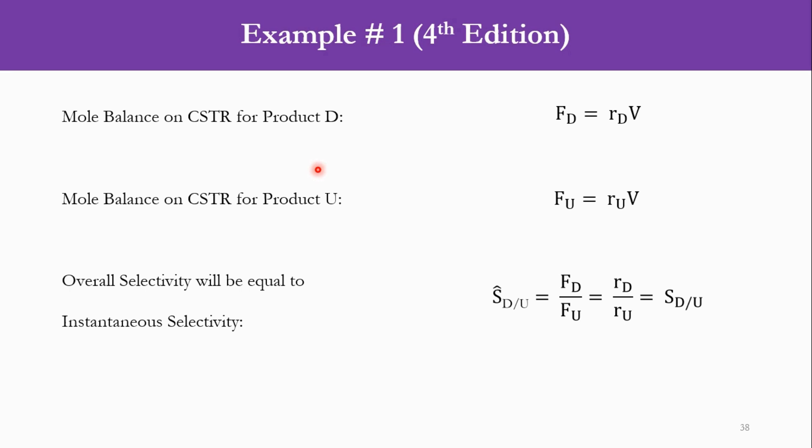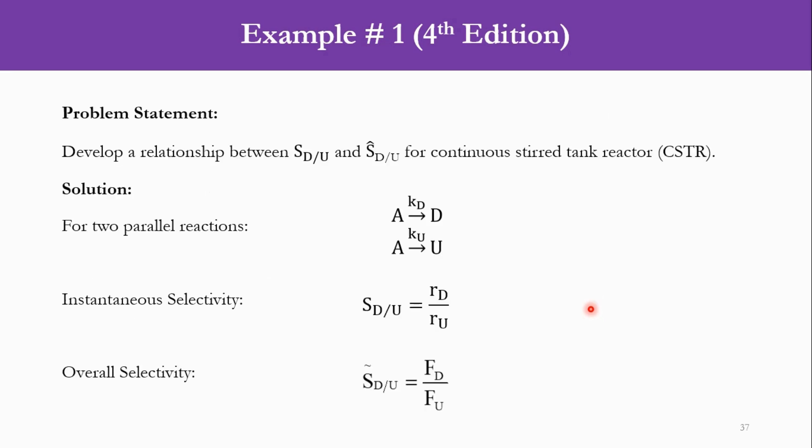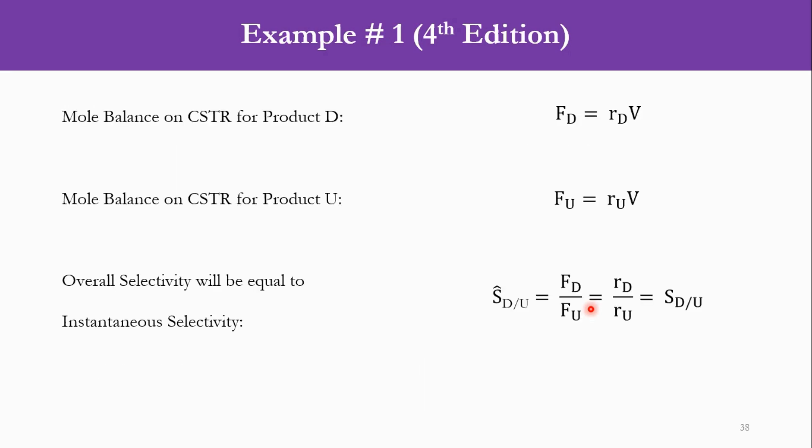If we apply the mole balance on CSTR for product D, it will be FD equals rD into V. And if we apply for product U, it will be FU equals rU into V. So if we divide these two, this V will be cancelled out with this V. FD over FU is equal to rD over rU. Now that rD over rU is actually your instantaneous selectivity, while FD over FU is your overall selectivity. So these two selectivities are now equal. So what we conclude, with this relationship, we can say that for a CSTR, the instantaneous selectivity is always equal to the overall selectivity. While that may not be the case for the differential reactors like the batch PFR or PBR.